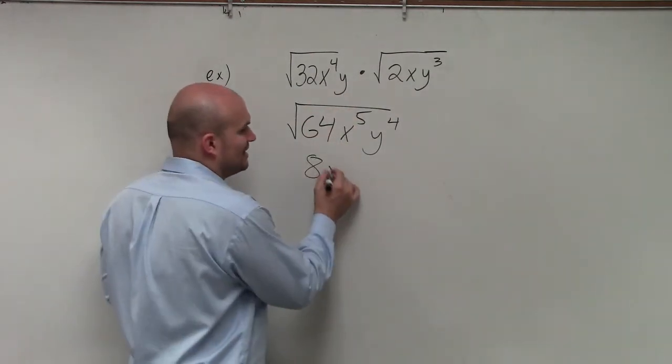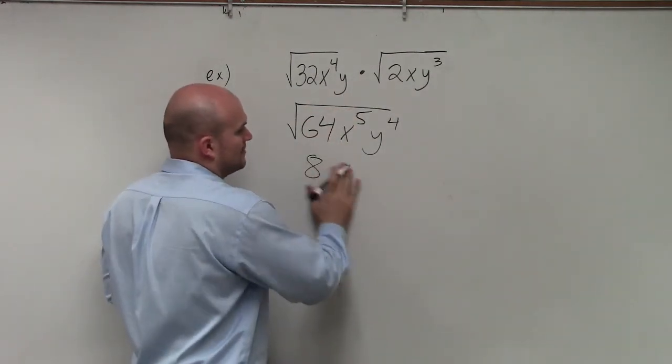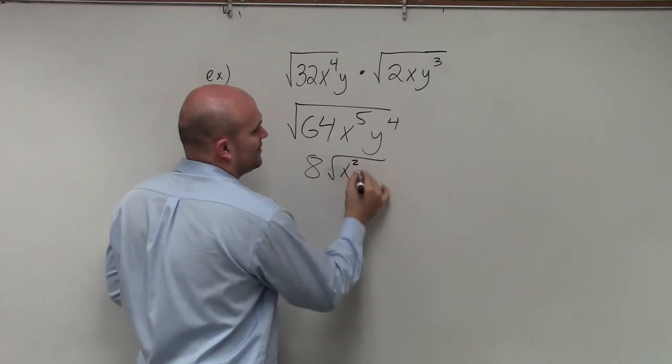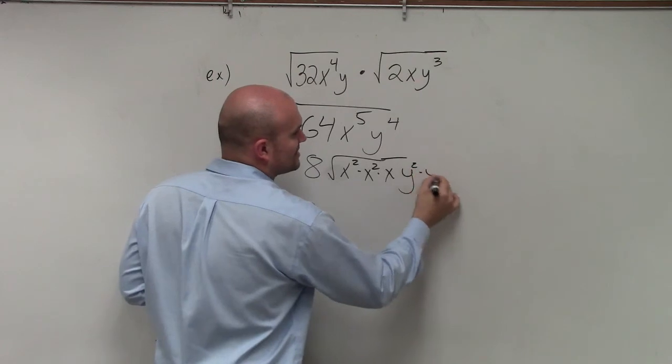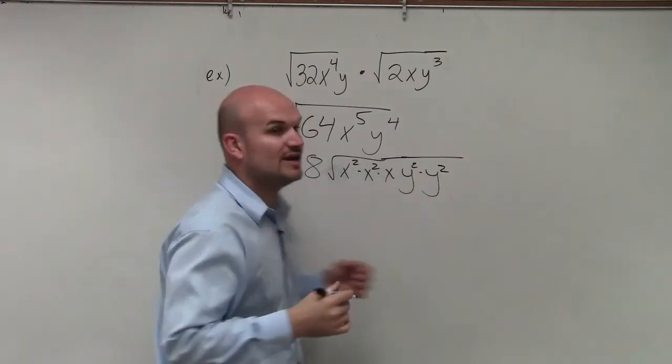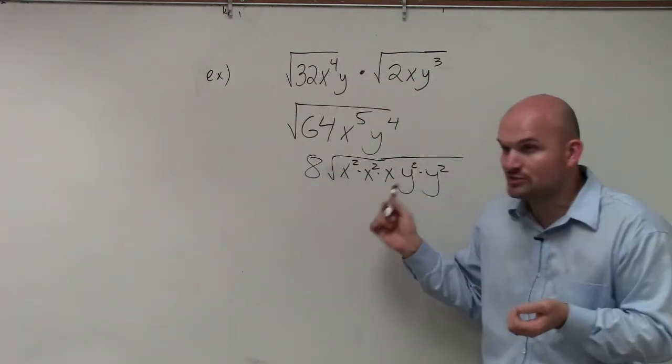So therefore, I could rewrite this as square root of x squared times x squared times x. And this would be y squared times y squared. So therefore, I can take the square root of all these squareds.